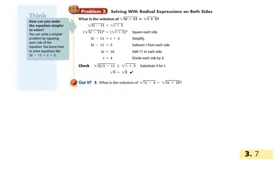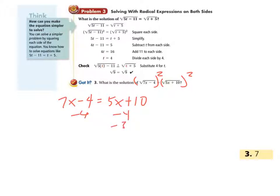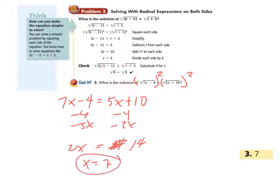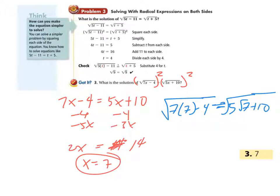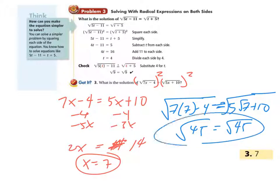Similarly, we're going to start by squaring both sides. We get 7x minus 4 equals 5x plus 10. Subtract 4 from both sides and subtract 5x from both sides, so 2x equals 14. Divide off the 2 and x equals 7. We go back and prove that by plugging 7 into the original equation: under this square root we get 7 times 7 minus 4, and on this side 5 times 7 plus 10. So we get the square root of 45 equals the square root of 45, and that's obviously true. So our answer of 7 was correct.